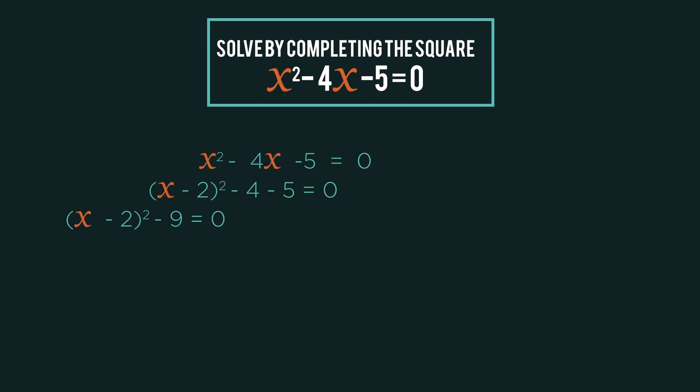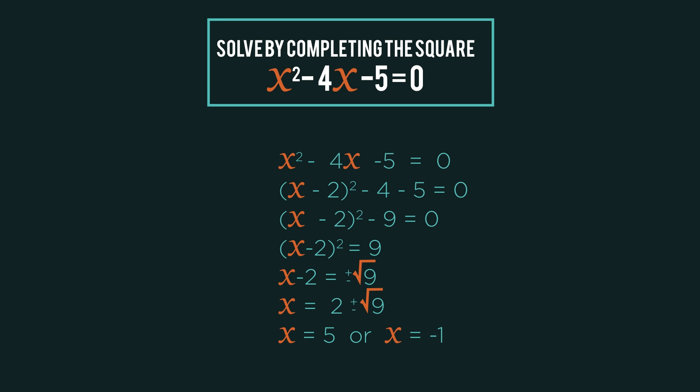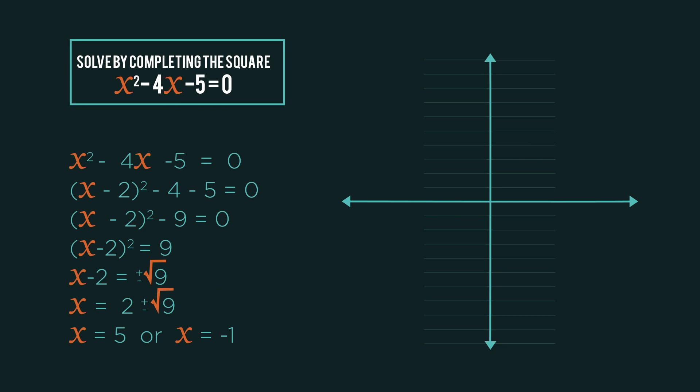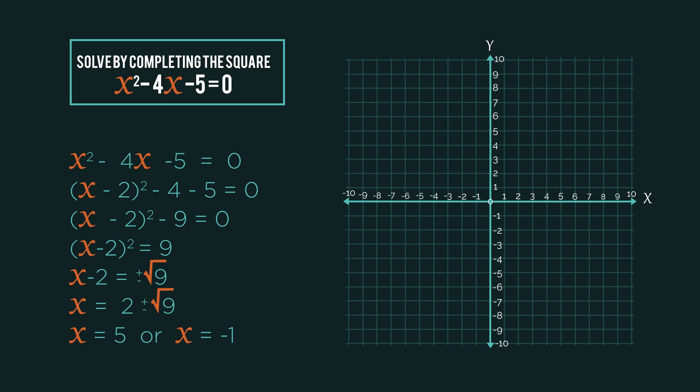So we have this quadratic which we completed the square and solved. If we then show it on a graph, what do you notice about the numbers from completing the square and the points on the graph? Pause the video and have a think.